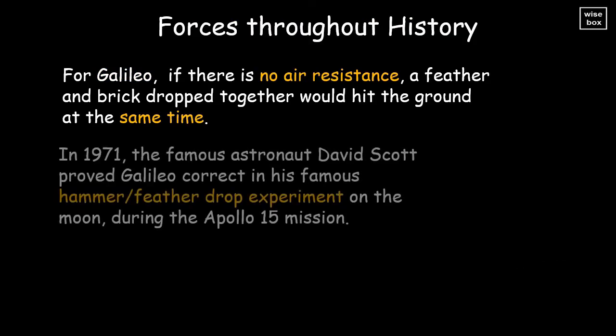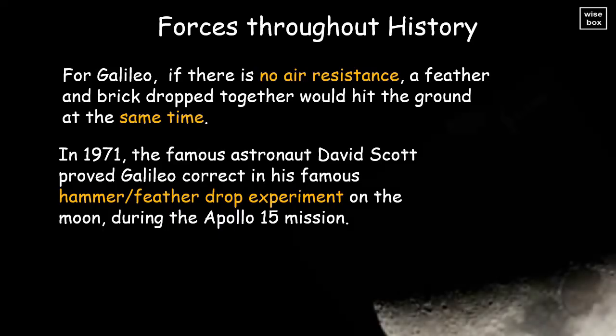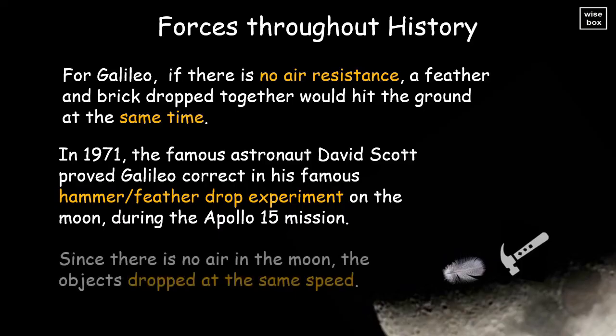In 1971, the famous astronaut David Scott proved Galileo correct in his famous hammer-feather drop experiment on the moon during the Apollo 15 mission. Since there is no air in the moon, the objects dropped at the same speed.